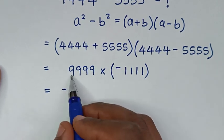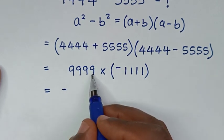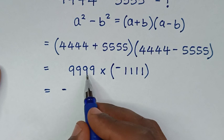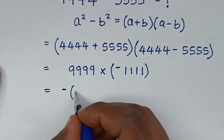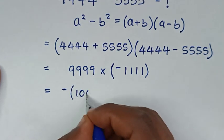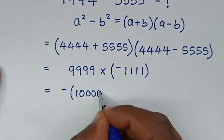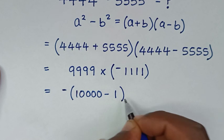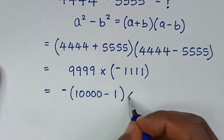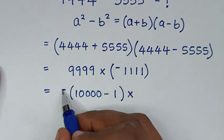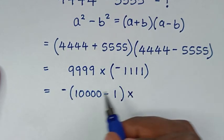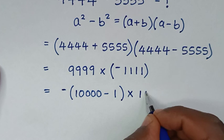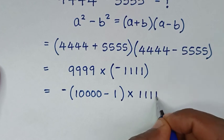In the next step, 9,999 is the same as (10,000 − 1). Then, remembering the negative outside the bracket, times 1,111.